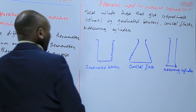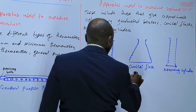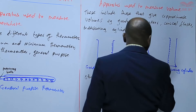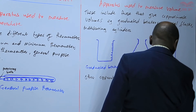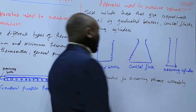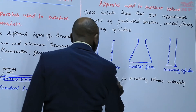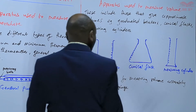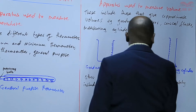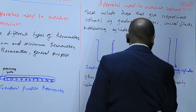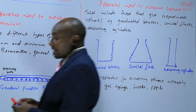We also have other apparatus for measuring volume accurately, where there is a very high level of accuracy required. These include the gas syringe, or simply the syringe, a burette, and a pipette. Basically, these ones are more accurate in terms of their measurements.